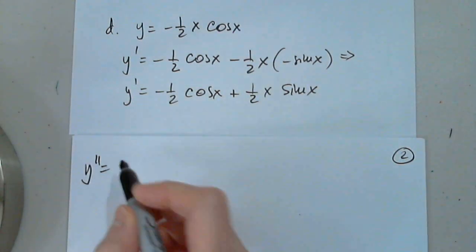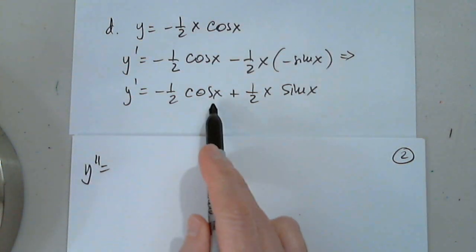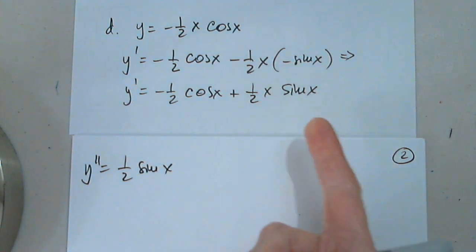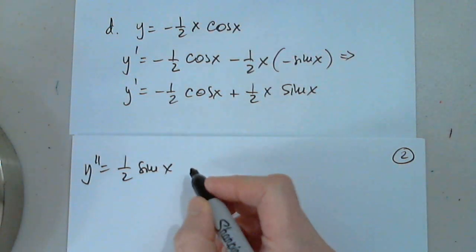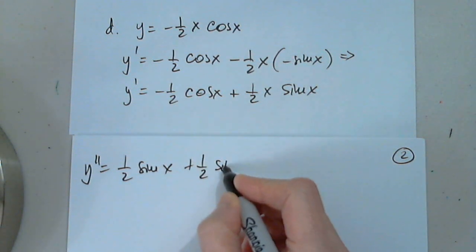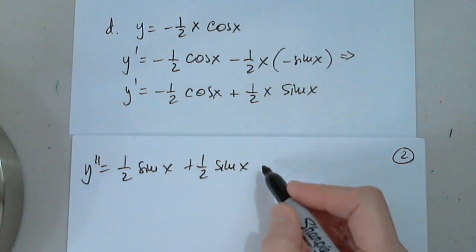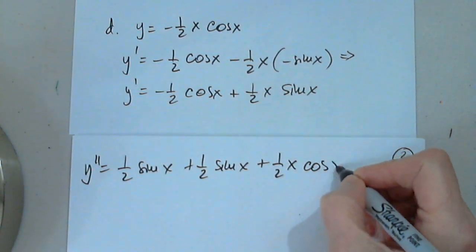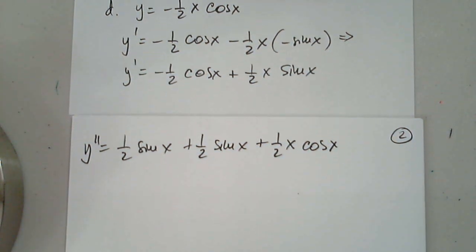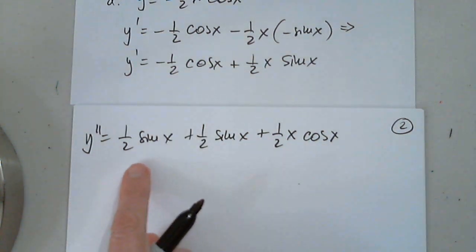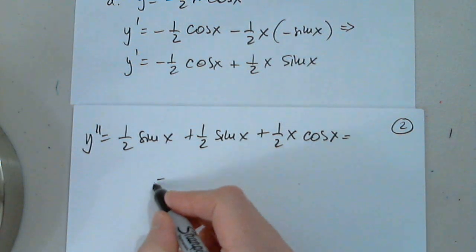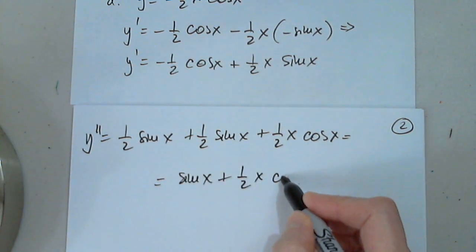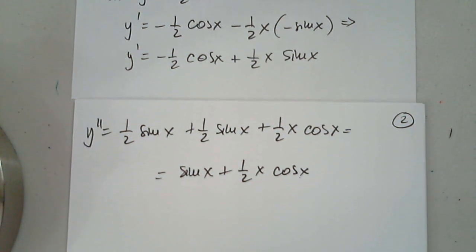Second derivative. Negative one half cosine prime is negative sine. So this is one half sine x. Plus, again the product rule here, plus one half sine x and plus one half x sine prime, which is cosine x. Now I go back to the differential equation in which, let's write one more step here. So this is sine x plus one half x cosine x.